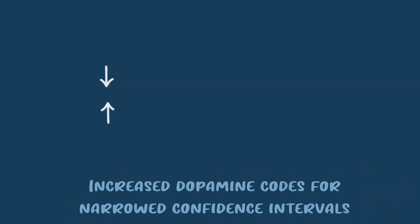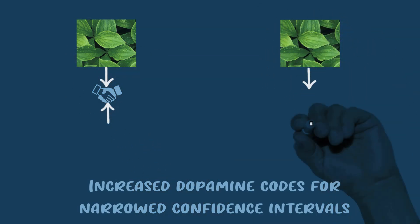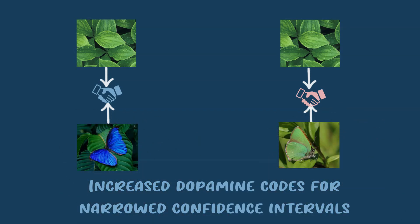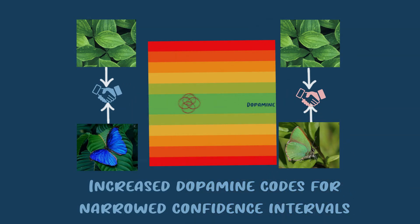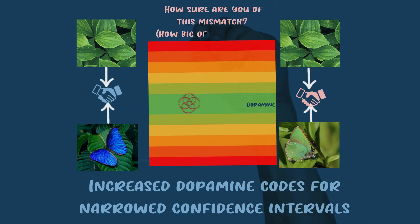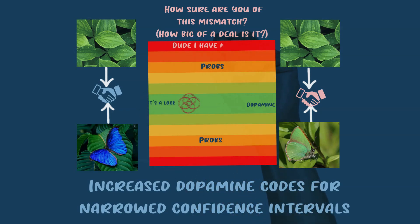We can think of perception as a handshake between our top-down models — our predictions of how the world works — and the bottom-up, which is just the raw sensations coming into our brain. When there's a mismatch, dopamine tells you just how different those things are. Imagine you're hiking in the woods and your top-down models are expecting leaves. Your brain asks: how sure are you of this mismatch? At the center, the brain is 100% sure something weird is going on; on the edges, it's less certain.